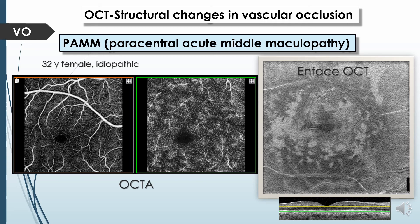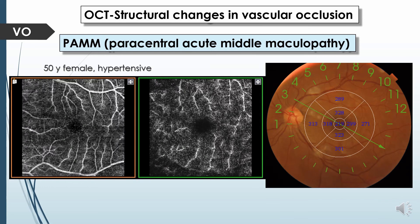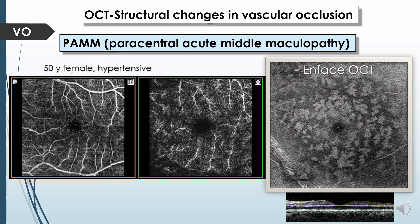In another case of PAM in a hypertensive female, OCT angiography shows loss of flow signals at the deep capillary plexus and loss of the characteristic pattern of this plexus. En-face OCT shows hyperreflectivity around the occluded venule with a characteristic fern-like appearance.